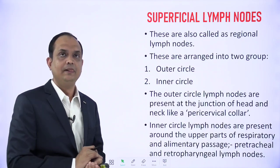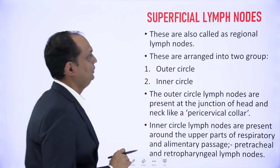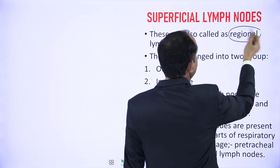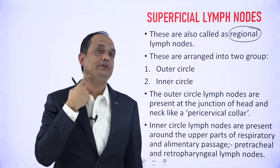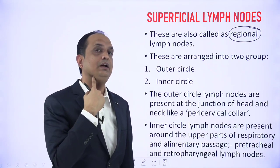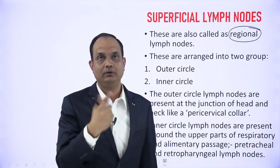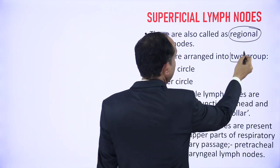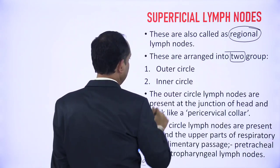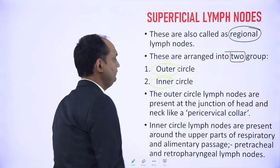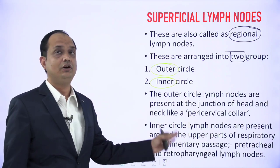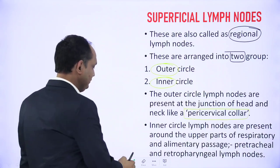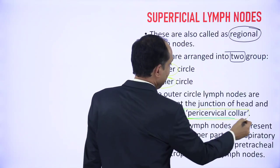The superficial group is arranged along the basal part of the head and is known as the regional group of lymph nodes, named according to different regions: mental, submandibular, parotid, occipital, and so on. The superficial group is further divided into two groups: one is the outer group and another is the inner group. The outer group is present at the junction of head and neck and is known as the pericervical collar.